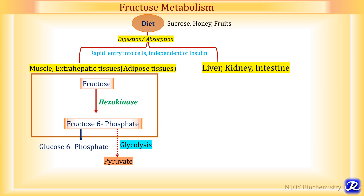Another fate is that fructose 6-phosphate is converted back to glucose 6-phosphate, and this glucose 6-phosphate can enter glycogenesis — there can be formation of glycogen. This is the second fate. In fasting and starvation conditions, this glucose 6-phosphate can be channeled towards gluconeogenesis.